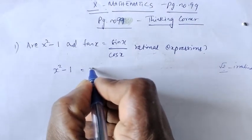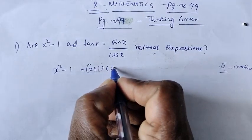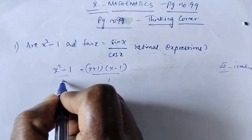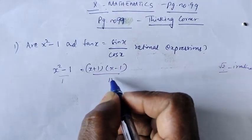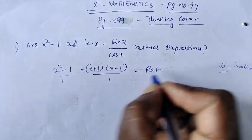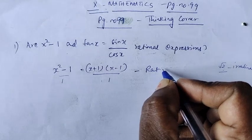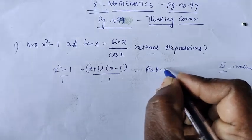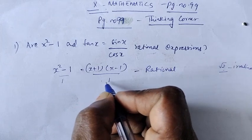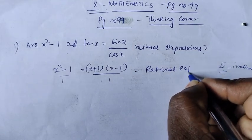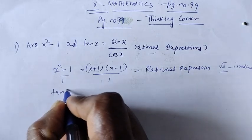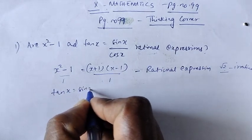If x minus 1 — the denominator is x plus 1 into x minus 1. This is divided by 1; it is divided by 1. There is no root in the denominator. So it is a rational expression. If the denominator comes under a root, it is not a rational expression.